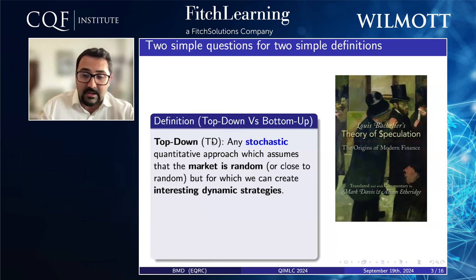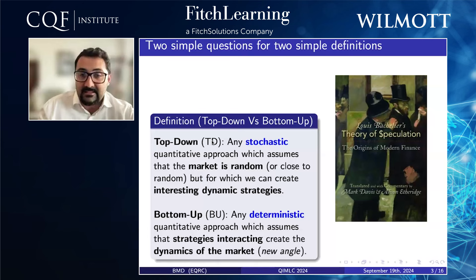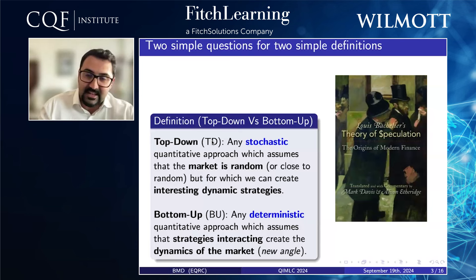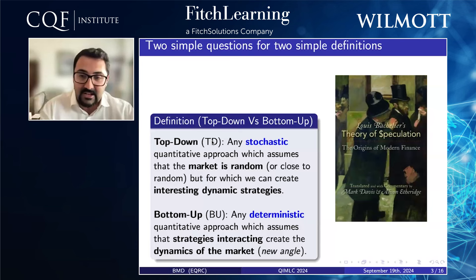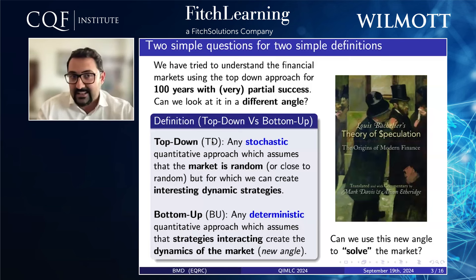What is the bottom-up approach? The bottom-up approach takes things at another angle, saying that the interaction of quantitative strategies together can yield something that appears stochastic, and perhaps we can build models or businesses around this idea rather than the opposite. The question is: quantitative finance has more or less failed for the last 100 years — can we solve the market with this angle?